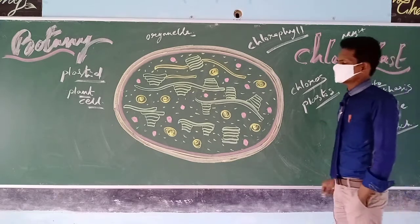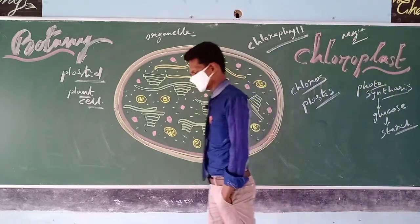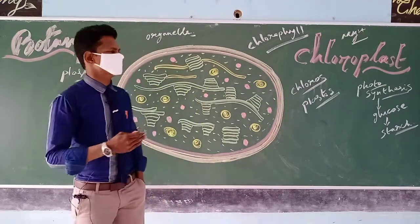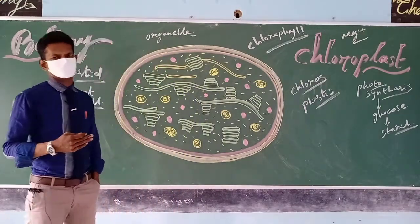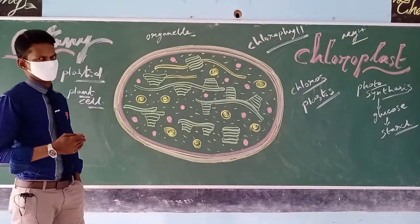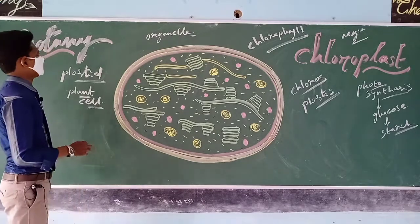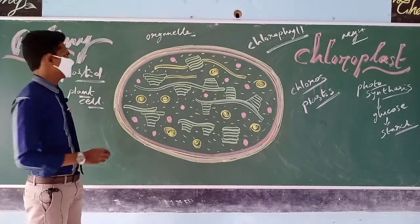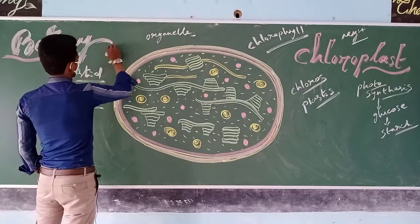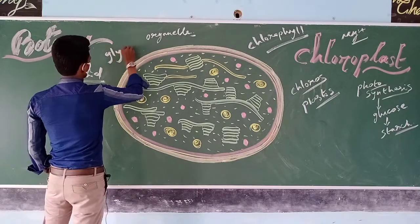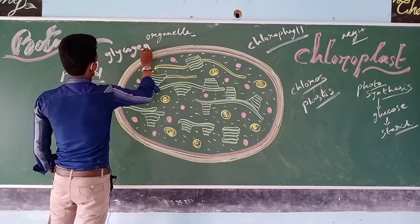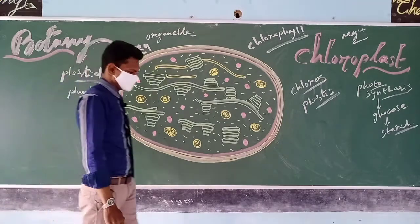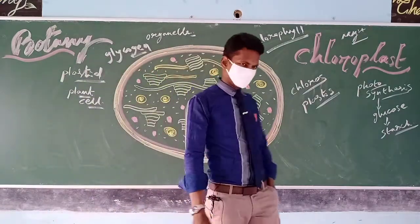Coming to the animal body, especially humans, we are unable to perform photosynthesis and unable to prepare our own food. However, we do have animal starch in the human body, which is called glycogen. Glycogen is the reserved food material, known as animal starch.